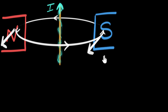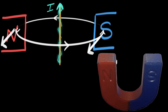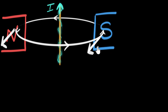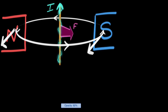If this is a giant horseshoe magnet, then the whole magnet is experiencing a force out of the screen. So the wire is pushing the magnet out of the screen. And from Newton's third law, this means the magnet must push the wire into the screen. So the force on the wire must be into the screen.